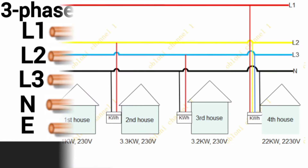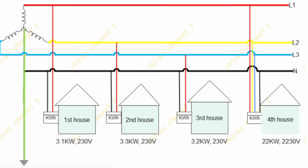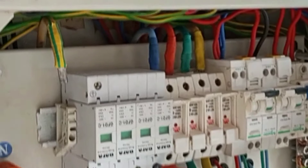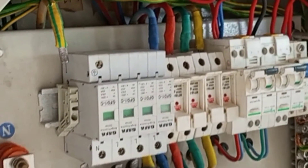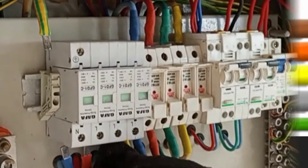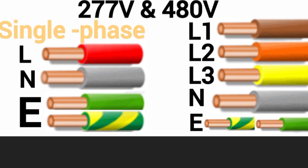The color code of an electrical wire can indicate its purpose and function, such as identifying the live wire, the neutral wire, and the earth wire — or in other words, the hot wire, the neutral wire, and the ground wire. By learning how to properly use these color codes, you can ensure that your electrical connections are made correctly to reduce the risk of electrical hazards.